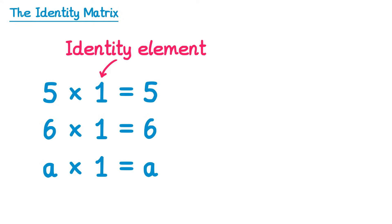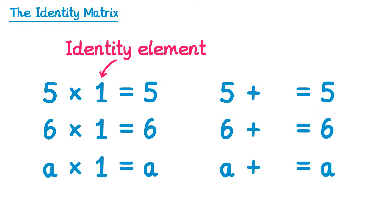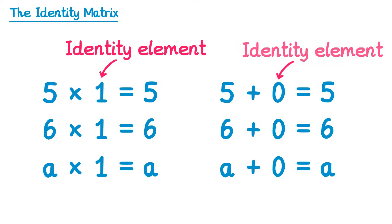Is there an identity element for addition? Well, if we started with five, six, and a, but rather than multiplying we added, and we wanted to end up with an identical number — five, six, or a — what would you need to add? It's fairly obvious that this is zero. So zero is an identity element for addition because it keeps the number unchanged.